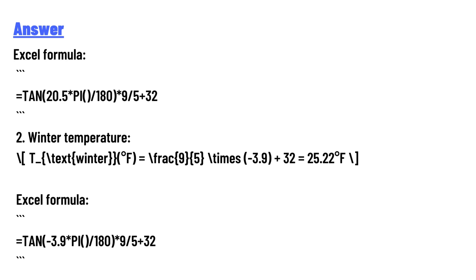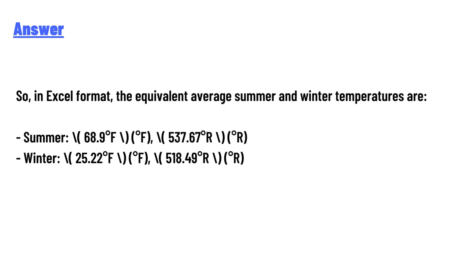Second, winter temperature T text winter Fahrenheit equals 9/5 times minus 3.9 plus 32 equals 25.22 Fahrenheit. Excel formula equals TAN into minus 3.9 multiplied by PI/180 multiplied by 9 over 5 plus 32.